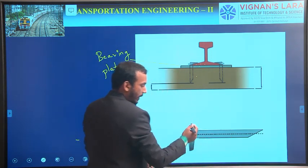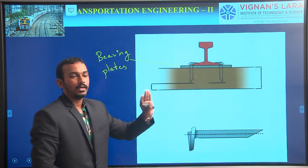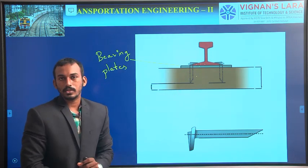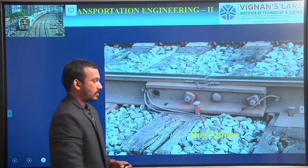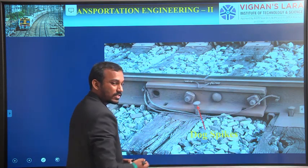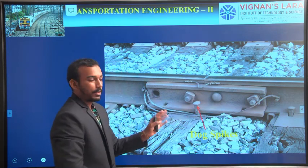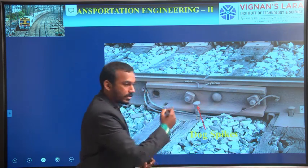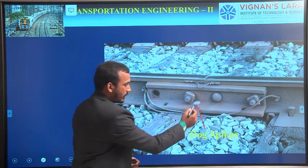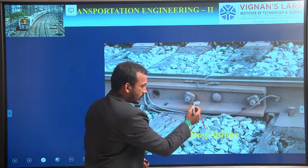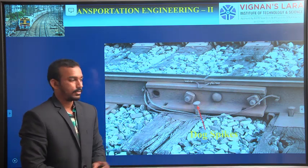This is an individual line diagram showing how we fix the rail to the sleepers using dog spikes. See the practical image — this is a wooden sleeper. This is a fish plate, and below the fish plate there is the flange of the rail. We have inserted the dog spikes to hold the gauge.